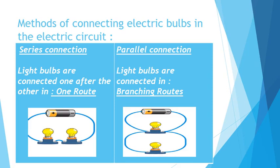In series connection, the light bulbs are connected one after the other — they all have the same route. While in parallel, each and every lamp has its own branch and its own route.